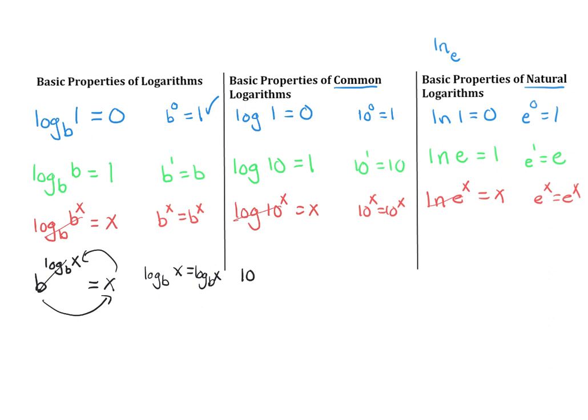Same thing: if you have 10 to the power of common log x, it is just going to equal x. And if you have E to the power of natural log of x, that will also equal x. This last property is true for when x is greater than 0.